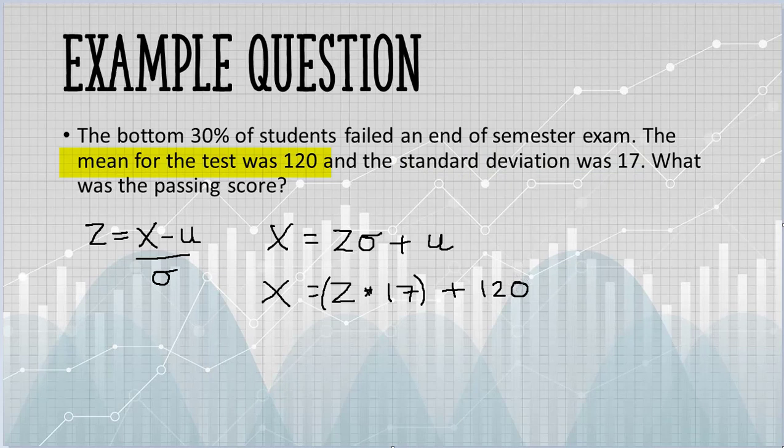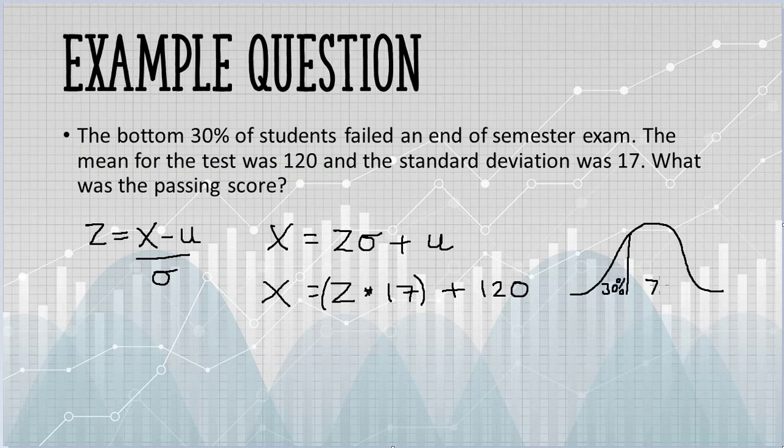Next, we want to look up our z-score. Here's the value we're looking up. We're told 30% of students failed. That must mean that 70% passed.